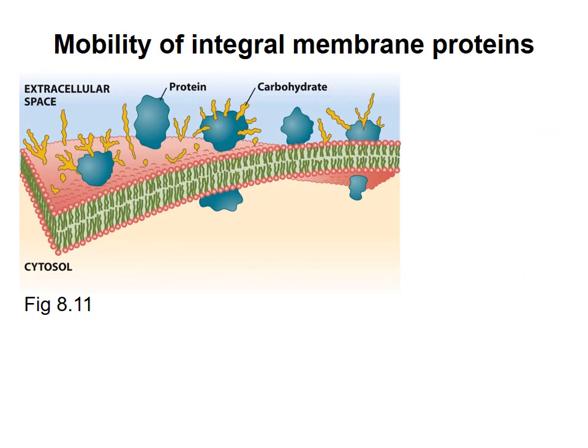Like lipid molecules, membrane proteins are generally not fixed in one location in the membrane, but can diffuse laterally in the plane of the bilayer. Because lipid and protein molecules can move around in the bilayer, membranes are said to have a fluid mosaic structure. However, proteins do not flip from one side of the membrane to the other or turn upside down. The same part of the protein is always on one side of the membrane.